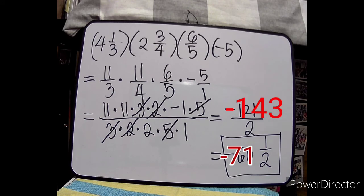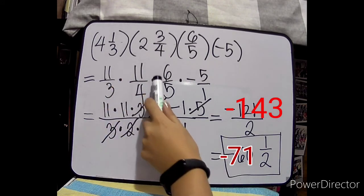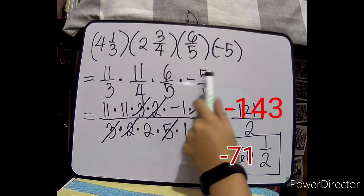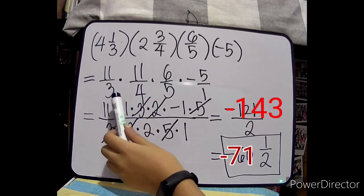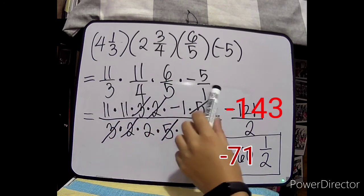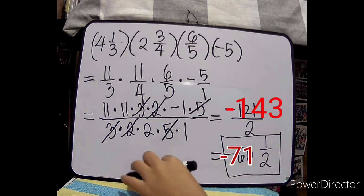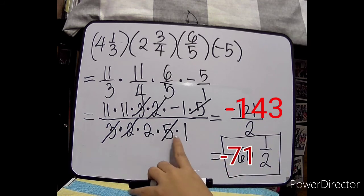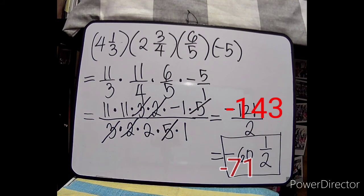Again, if you're good at multiplying 11 times 11 times 6 times negative 5 over 2 times 4 times 5 times 1 and then finding the lowest term by finding the GCF, then go for it. This is just my way of solving — so I don't have to find the lowest term at the end.